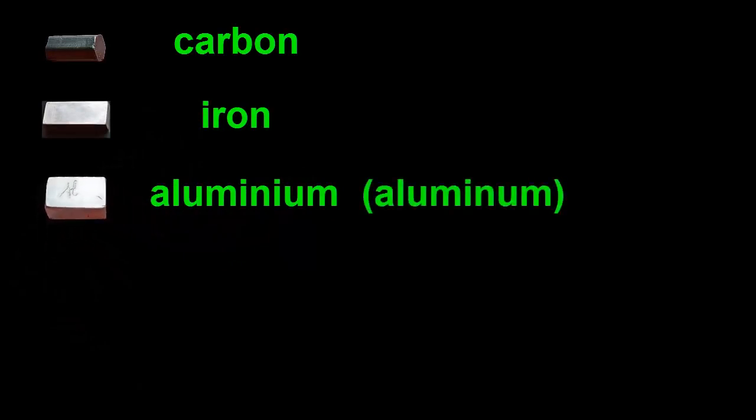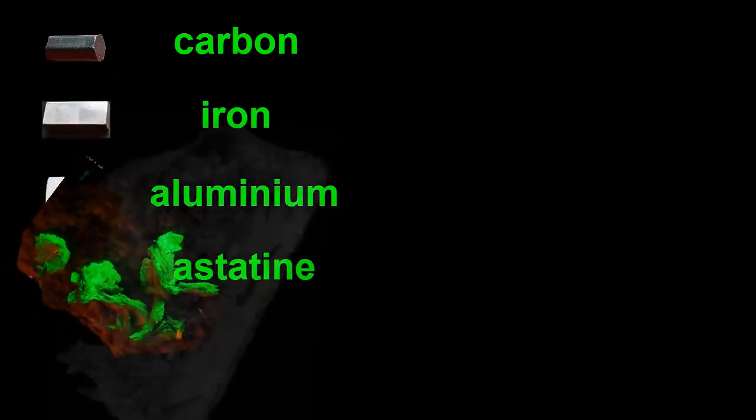Because there are 92 kinds of atoms, there must be 92 elements too, one for each kind. You probably have already heard of some of them, like carbon, iron and aluminum, or aluminium if you're American. But maybe not astatine or ytterbium.